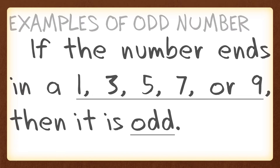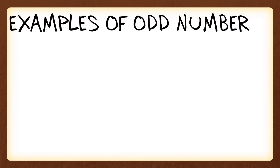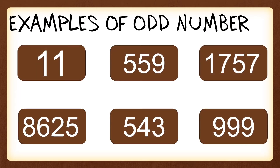So these are some examples of an odd number: eleven, five hundred fifty-nine, one thousand seven hundred fifty-seven, eight thousand six hundred twenty-five, five thousand five hundred forty-three, and nine hundred ninety-nine.